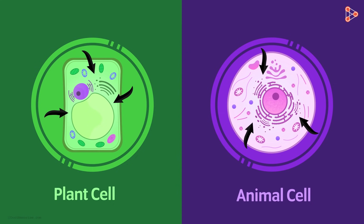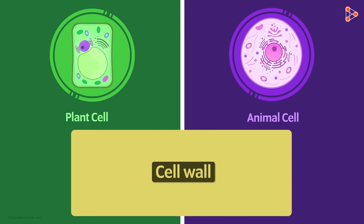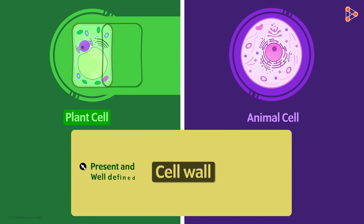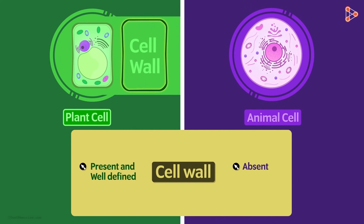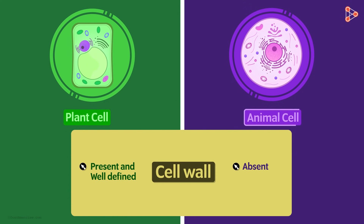If we travel from the outside of the cell to the inner core, the first difference we find is the presence and absence of the cell wall. Plant cells have a proper, well-defined cell wall. On the other hand, animal cells do not have a cell wall at all — they just have the cell membrane, which is also part of plant cells. It's due to the cell wall that plant cells obtain their proper defined shape, whereas animal cells do not have a proper shape because they lack a cell wall.